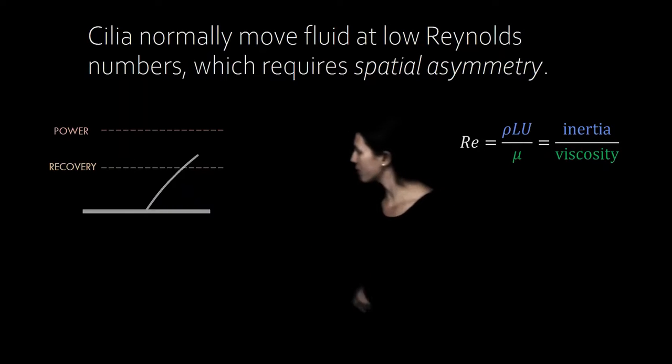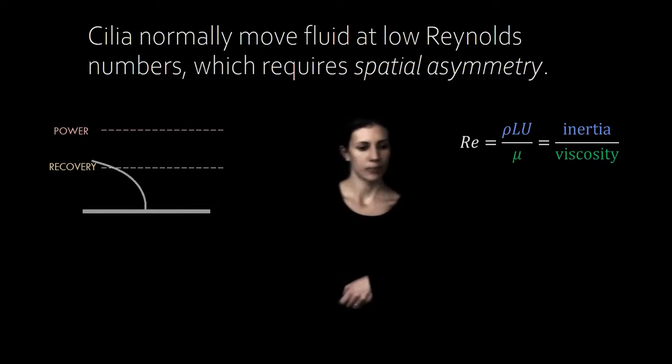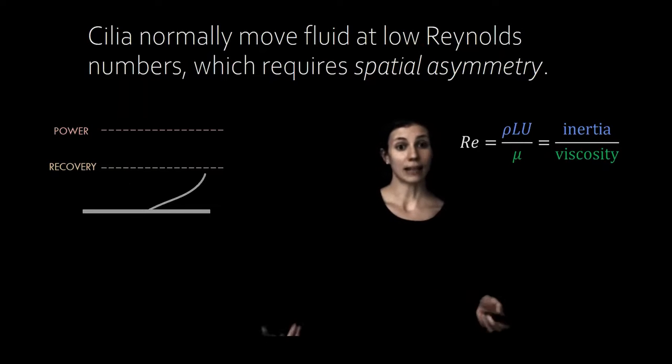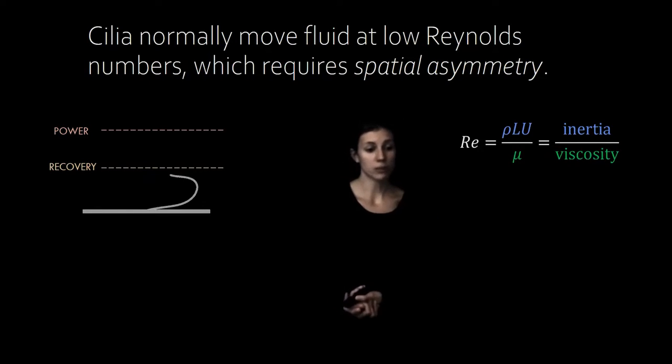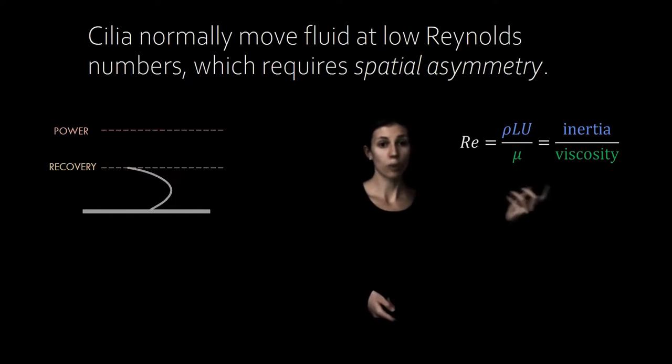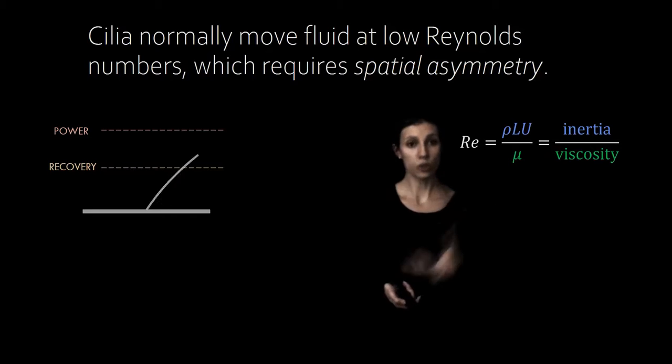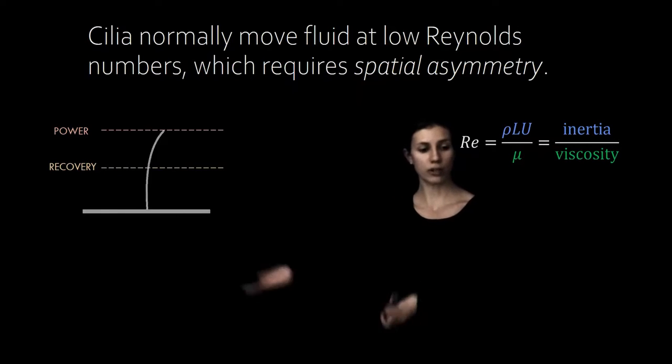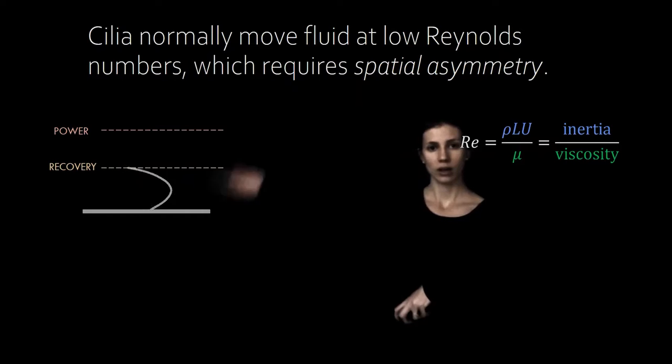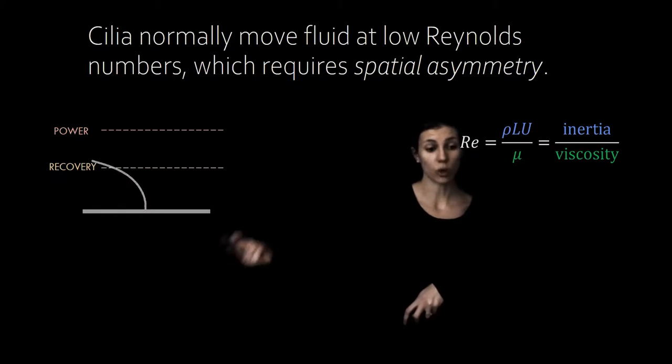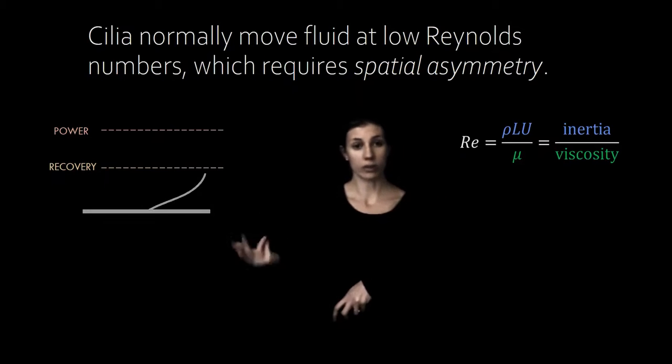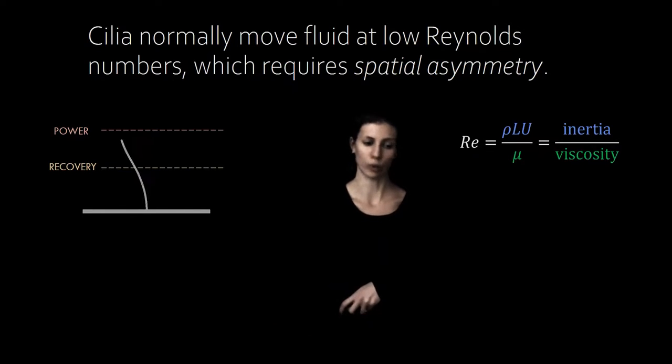You would notice that the stroke of the cilium is asymmetric. This is because at low Reynolds number, flow is laminar and also time-reversible. Viscous forces dominate over inertial forces, so there's no possibility of gliding. If you push symmetrically in a symmetric path, the fluid is going to move symmetrically too. So if you're swimming at a low Reynolds number, then you have to move asymmetrically in order to move at all.